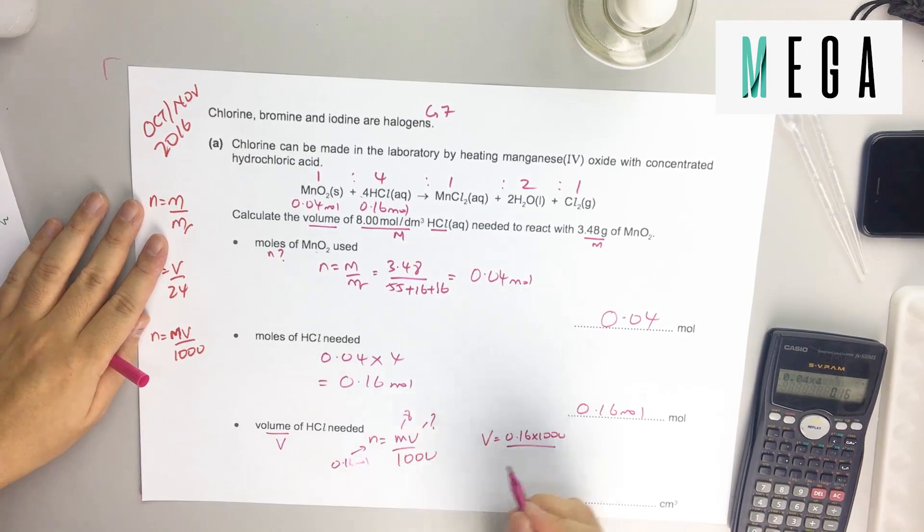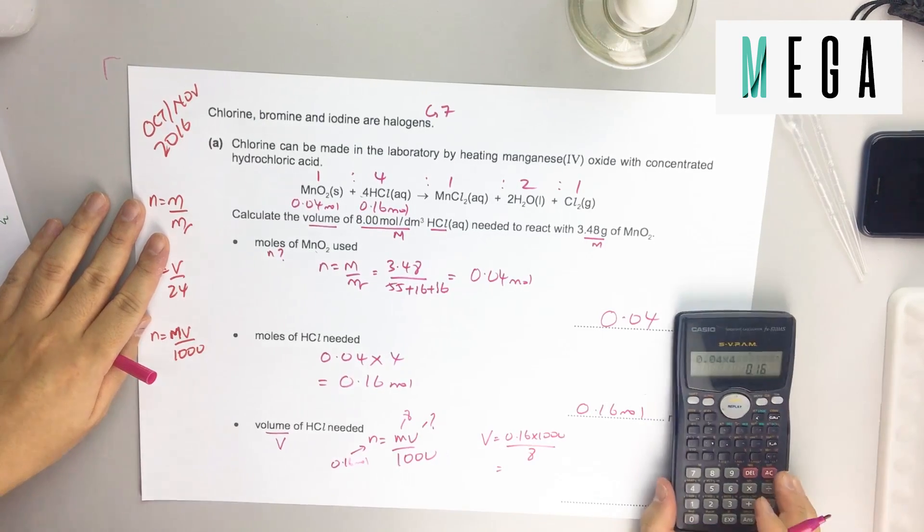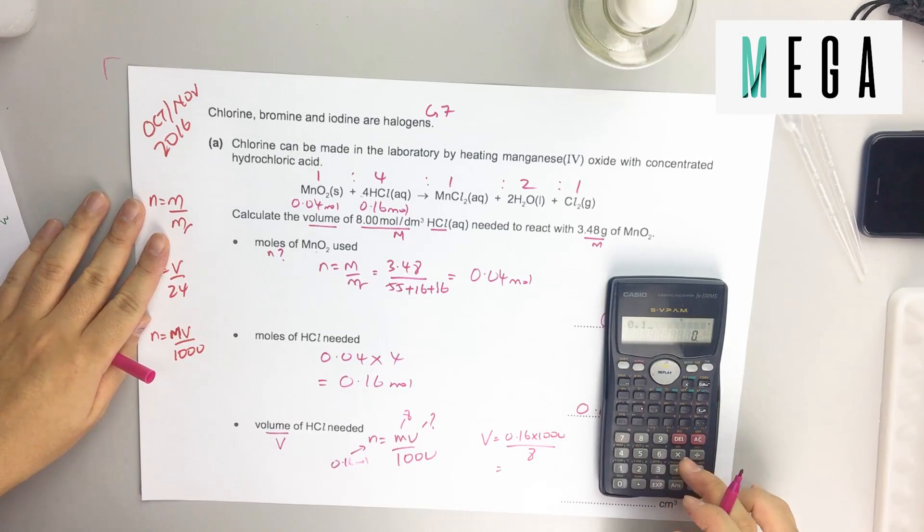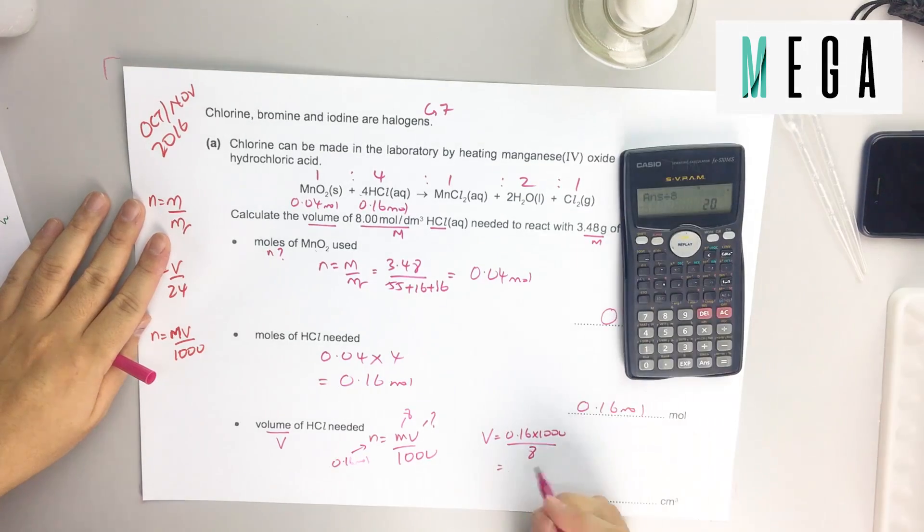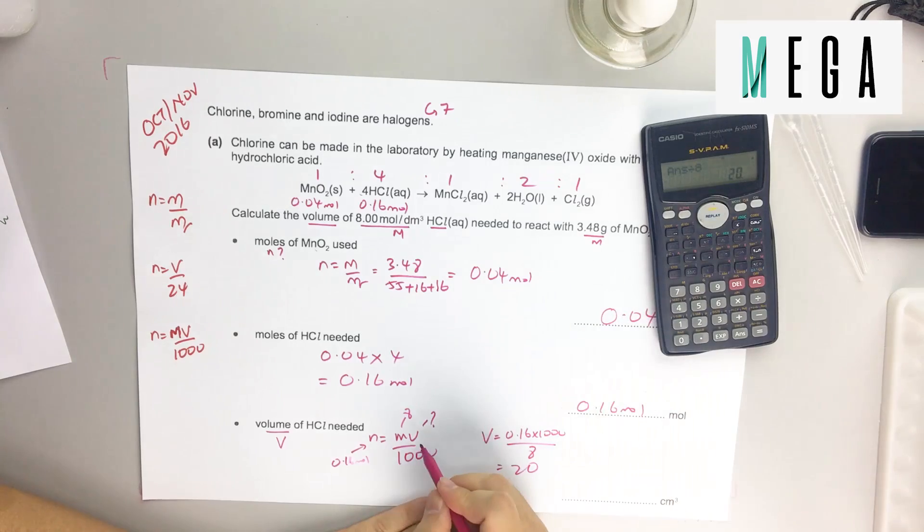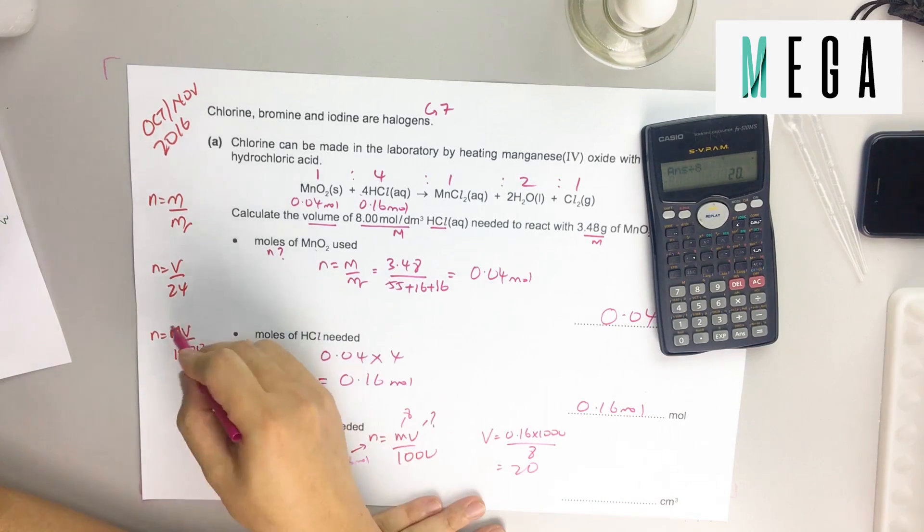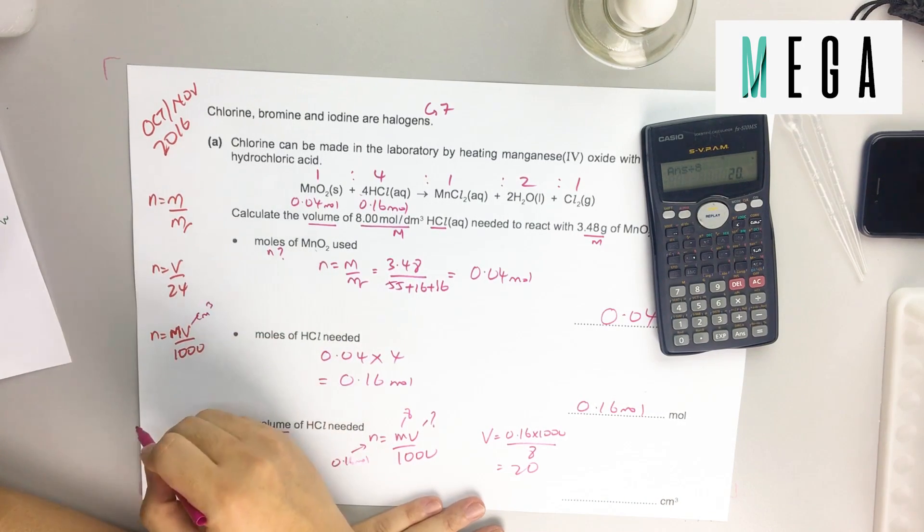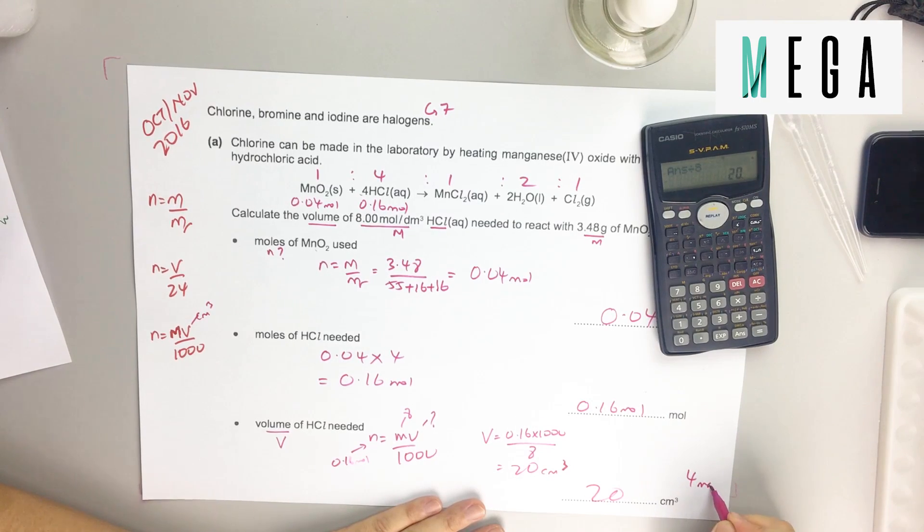Okay, divided by 8, simple mathematics. 0.16, so we got 20. Then you'll be asking, is it cm³ or dm³? Since this initial formula is in cm³, therefore the answer you get is also in cm³. Immediately notice it's given in cm³, just put 20. Okay, so done. This is about four to five marks in IGCSE.